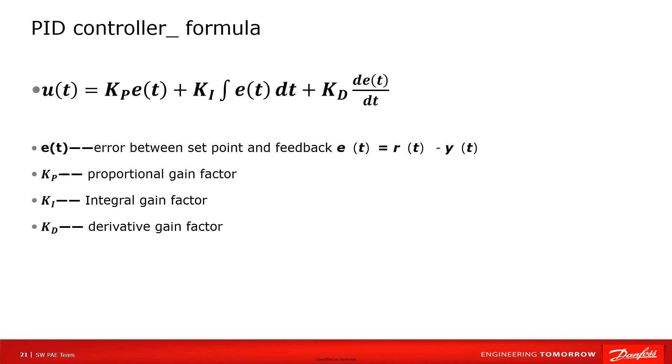Following are the formulas of PID controller. In these formulas, e(t) is the error signal, which is the difference between setpoint and feedback.